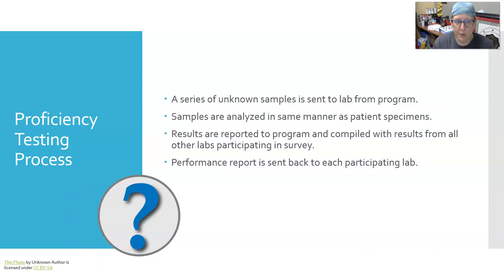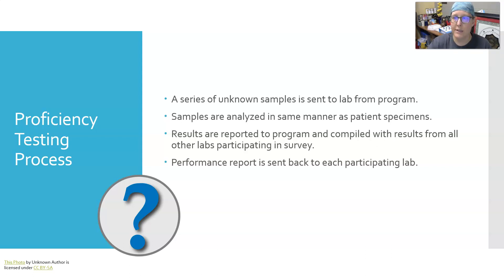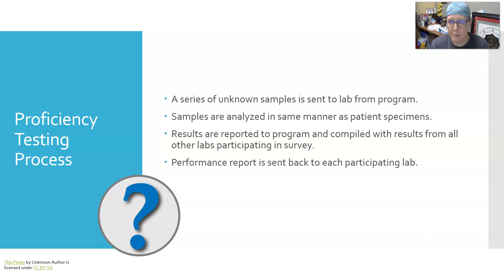So what is the testing process? You get a series of unknown samples sent to the lab from the program — usually from CAP. The samples are analyzed in the same manner as a patient specimen; they need to be put into the normal run of things and done by the person assigned to that test. If a CAP survey comes in and you're assigned to chemistry and it's a chemistry CAP survey, then you're doing it — it's not up to the lead tech in chemistry. It has to be done by the testing personnel.